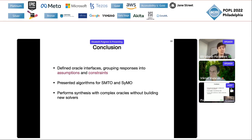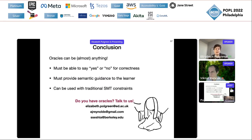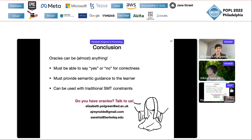To conclude, the main contributions are: we've defined oracle interfaces — a way of communicating what oracles do with your solver — and this allowed us to present a unifying algorithm for SMTO and SIMO that performs synthesis with complex oracles without needing to build new solvers or algorithms. The oracles can be almost anything: you need to be able to say yes or no for correctness, and something that provides semantic guidance to the learner. They can be used with traditional SMT constraints. We want your oracles — please talk to us, we want to build more benchmarks.